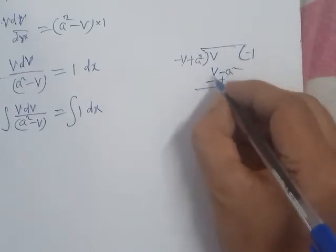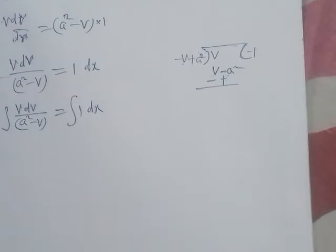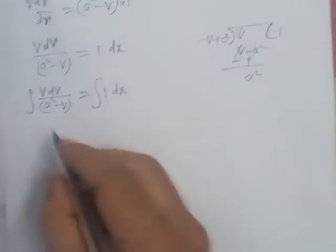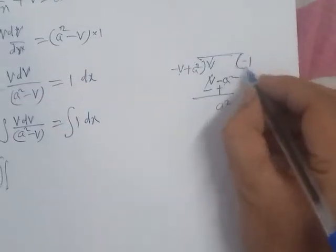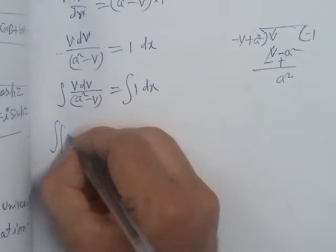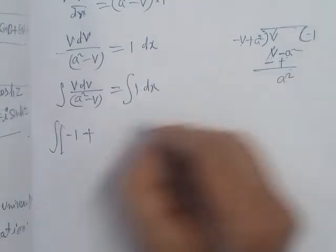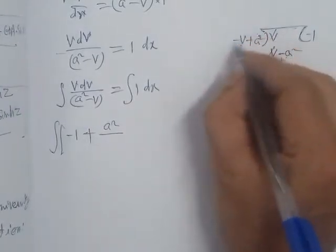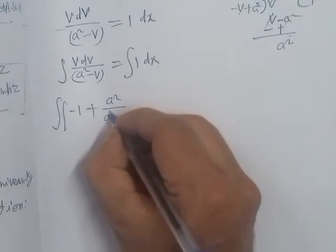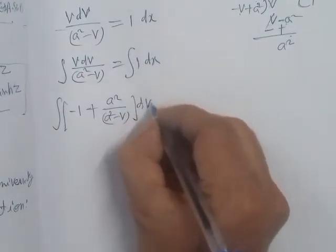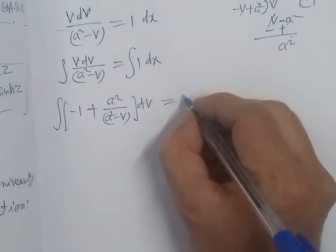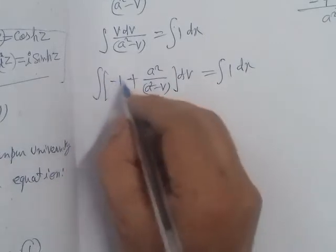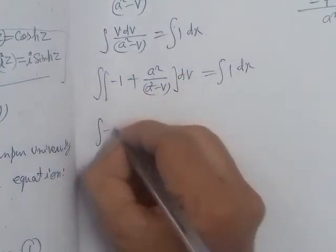After this we cancel and get a square plus left. The quotient will be written here: the quotient minus one plus remainder in the denominator, the divisor will be written. The divisor is a square minus v, and within the integral we will integrate. We will have two terms to integrate, one of which gives a log form.